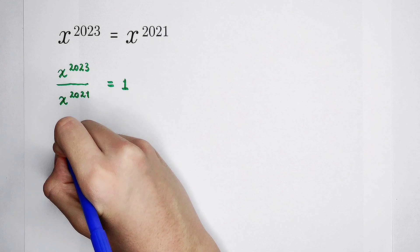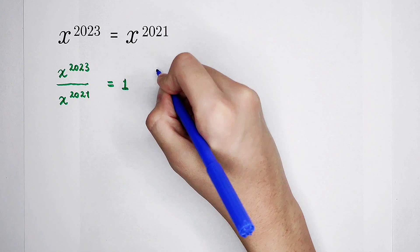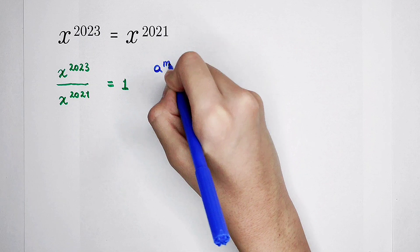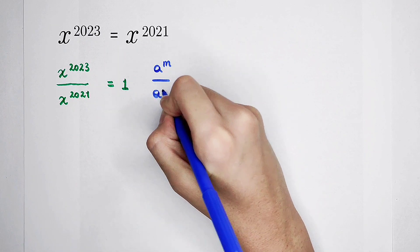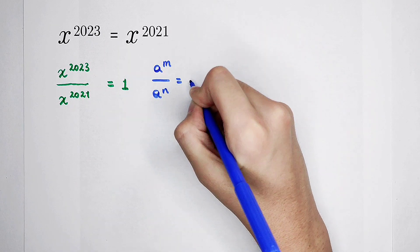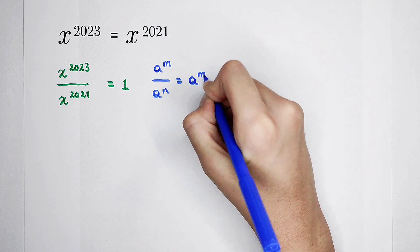By the formula. Which formula should we use? Of course, a to the power of m divided by a to the power of n is equal to a to the power of m minus n.